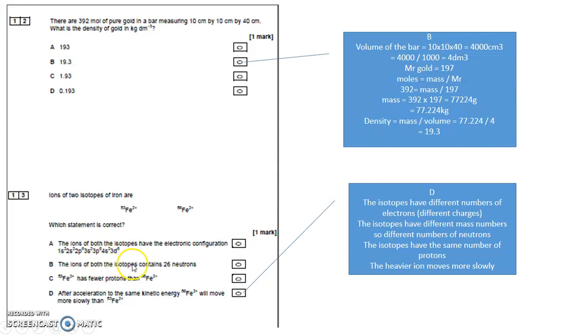The ions both have isotopes containing 26 neutrons. No, they've got different mass numbers, that's what isotopes are. They've got different mass numbers because they've got different numbers of neutrons.